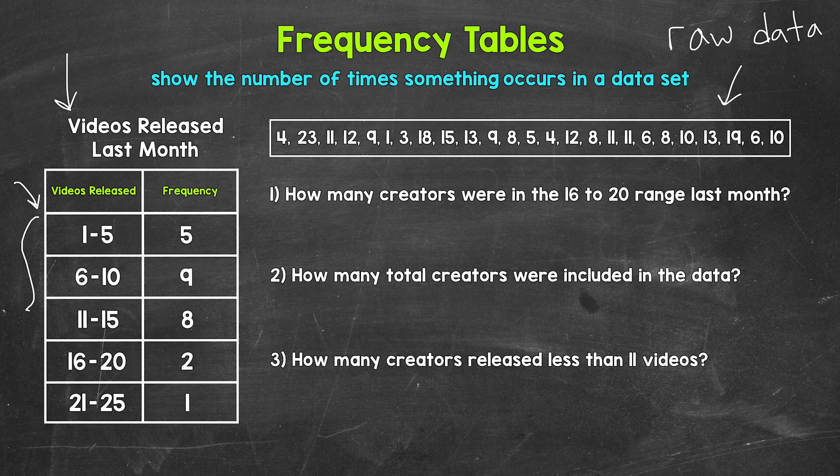So these are the groups right here in the videos released column. If we have a wide range of data and a lot of individual values, using groups helps us create a more condensed and manageable table. Depending on the situation and the data, writing each individual value could create a very long table. For example, for this data, we would have to go from 1 to 23. That table would be pretty long. So think about if we had an even wider range and more individual values, maybe hundreds or even thousands of values. So these groups allow us to create a simpler and easier to work with table.